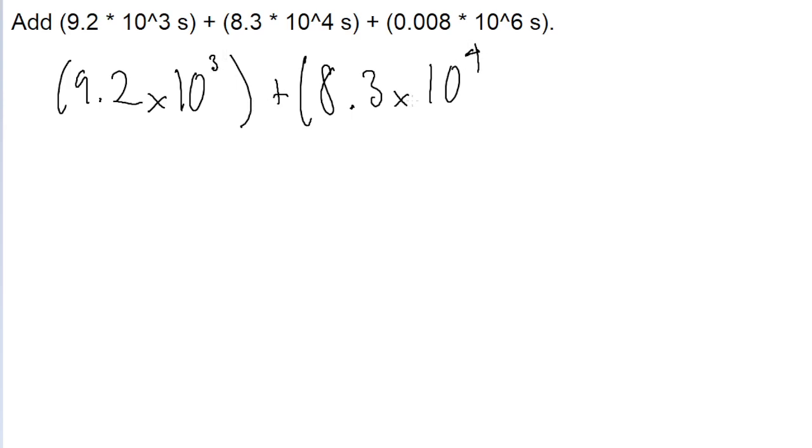One is 3 and one is 4. We can make the powers of 10 equal by shifting the decimal points around. So let's turn the 4 into a 3. It says 9.2 times 10 to the power of 3, plus, and then we'll take the times 10 to the power of 4, but instead make it a 3.